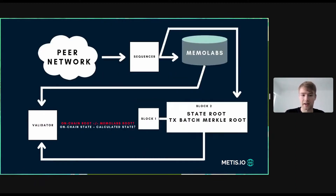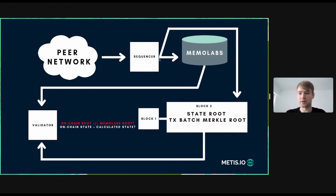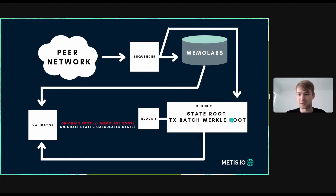Going back — let's say the transaction batch root is not equal to the MemoLabs root. This means that the sequencer, for whatever reason, decided not to post the data. They posted the Merkle root on-chain, but the validator wasn't able to find the data in MemoLabs. So all the data isn't found, and something needs to be done in order to retrieve it.